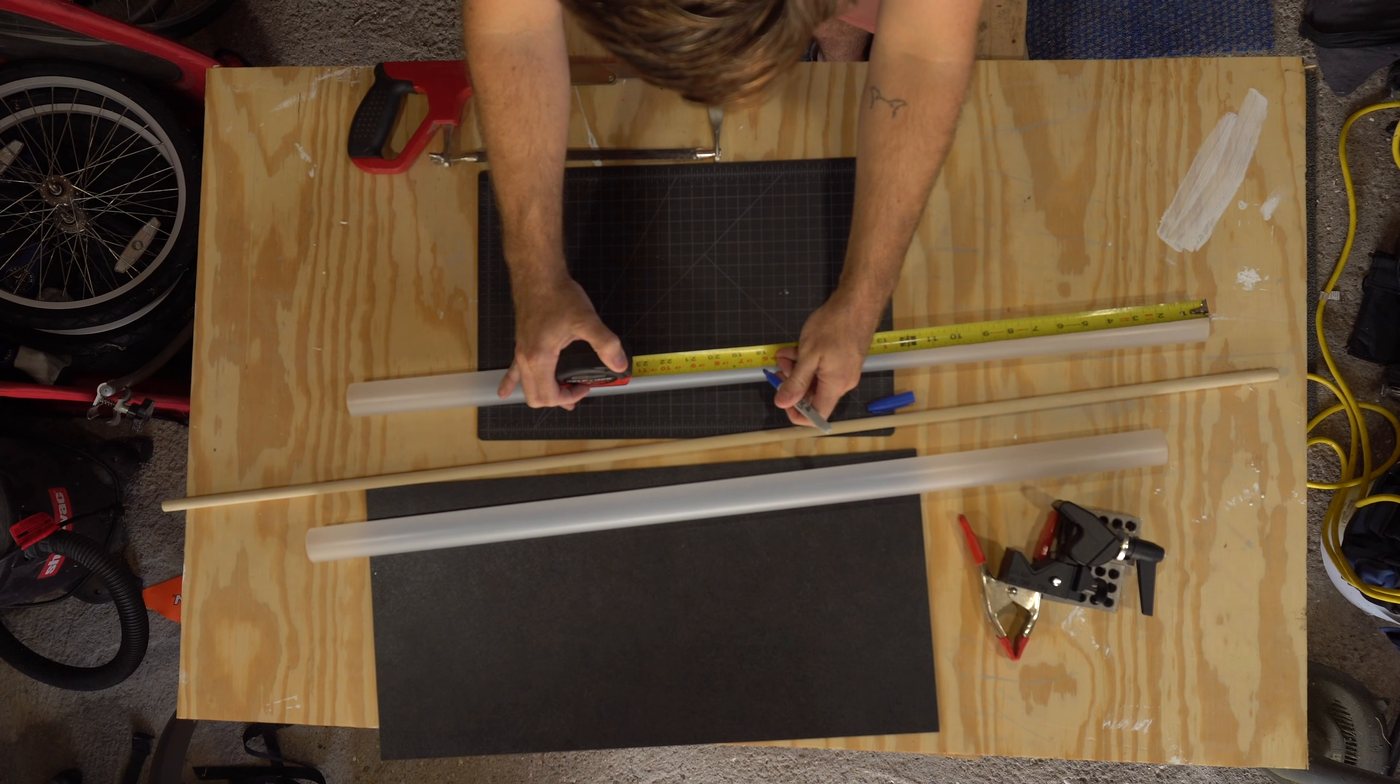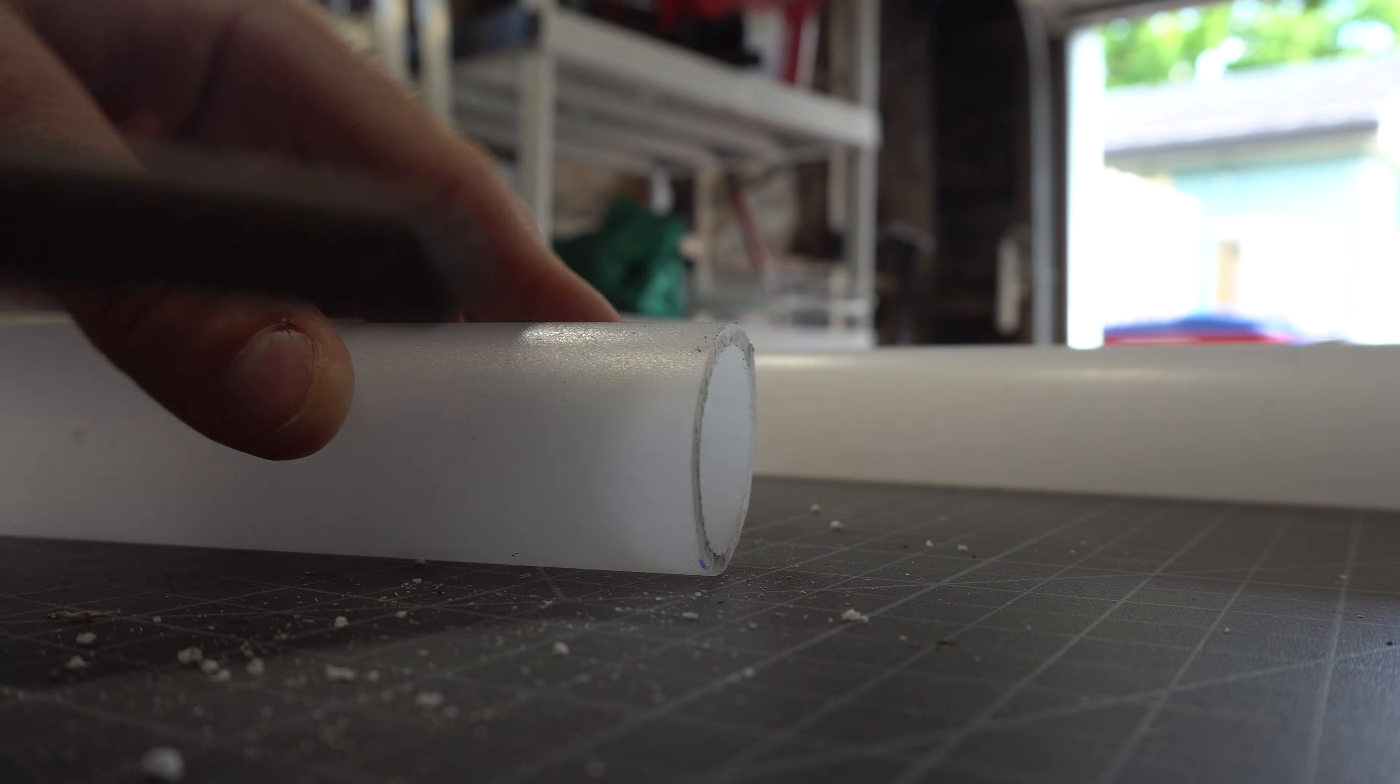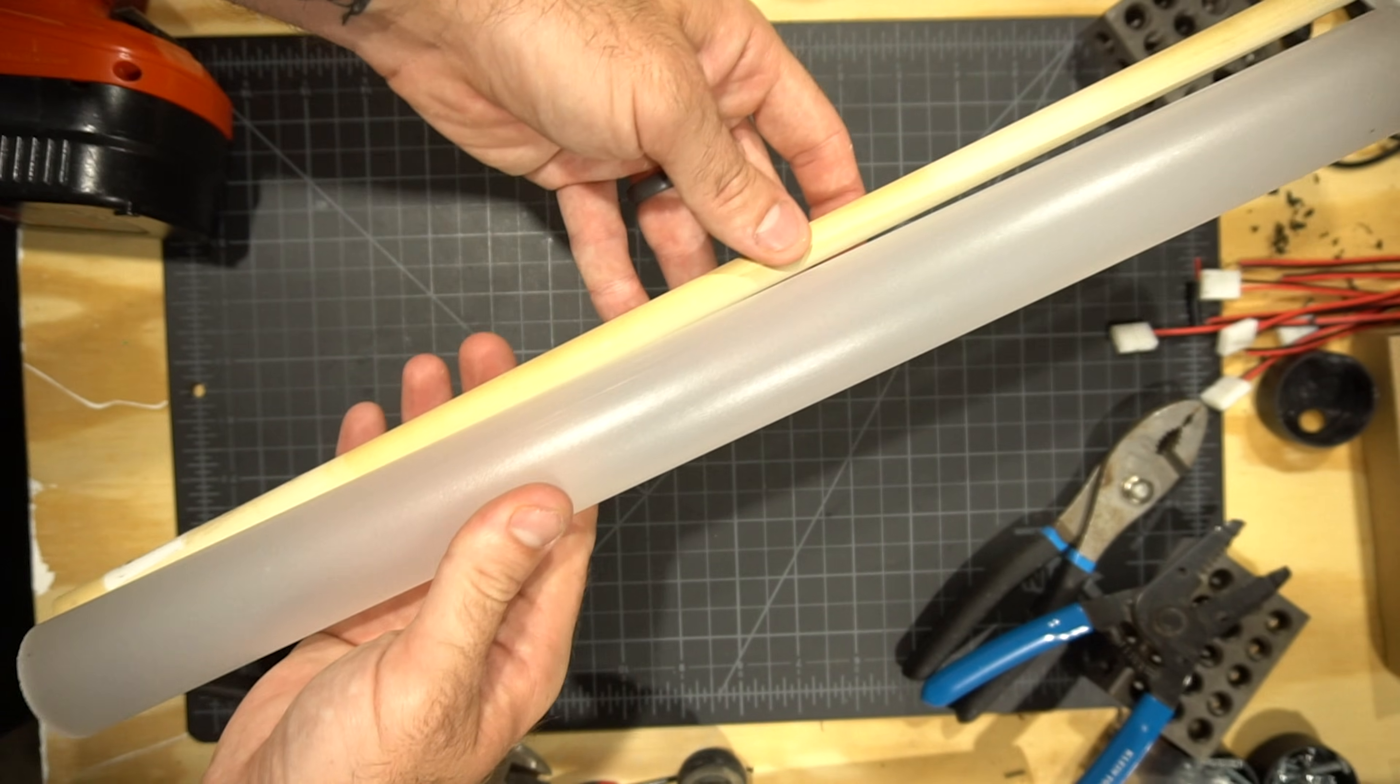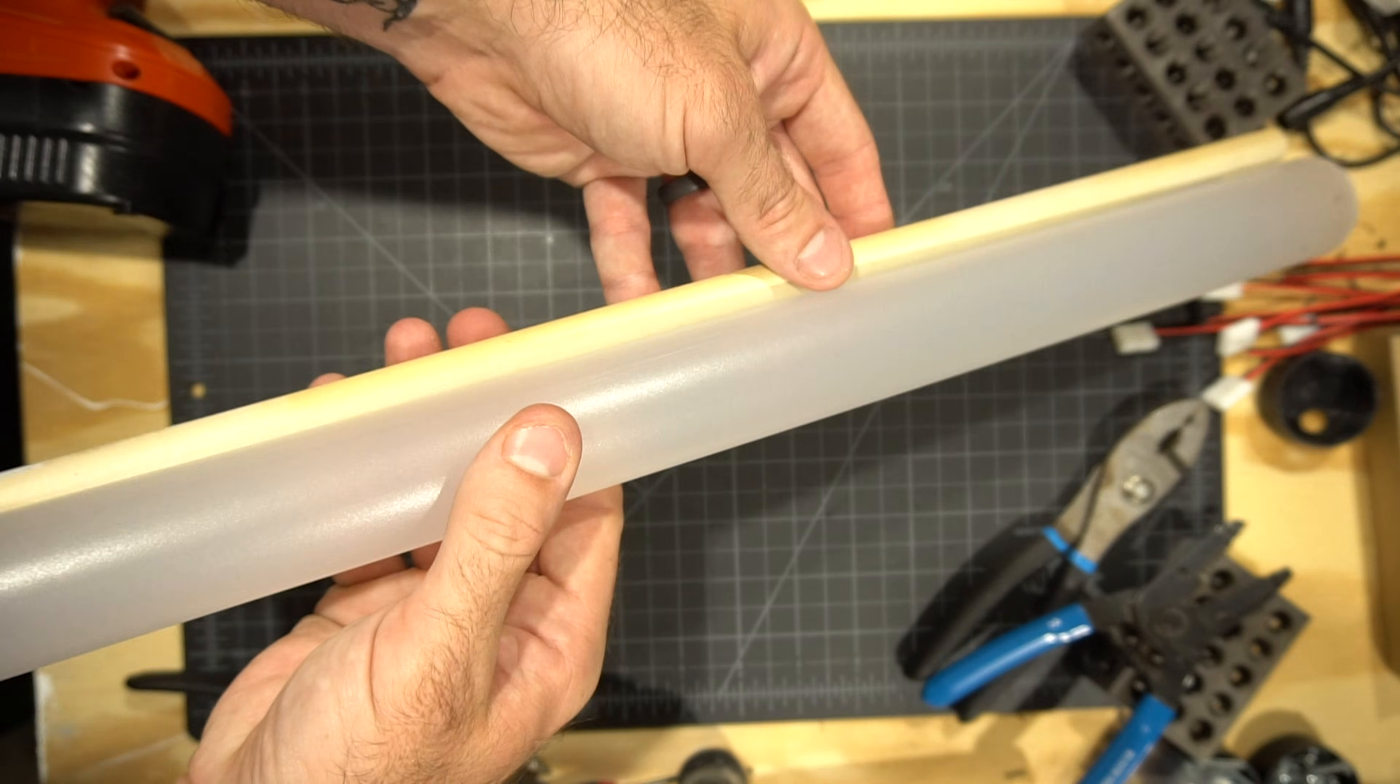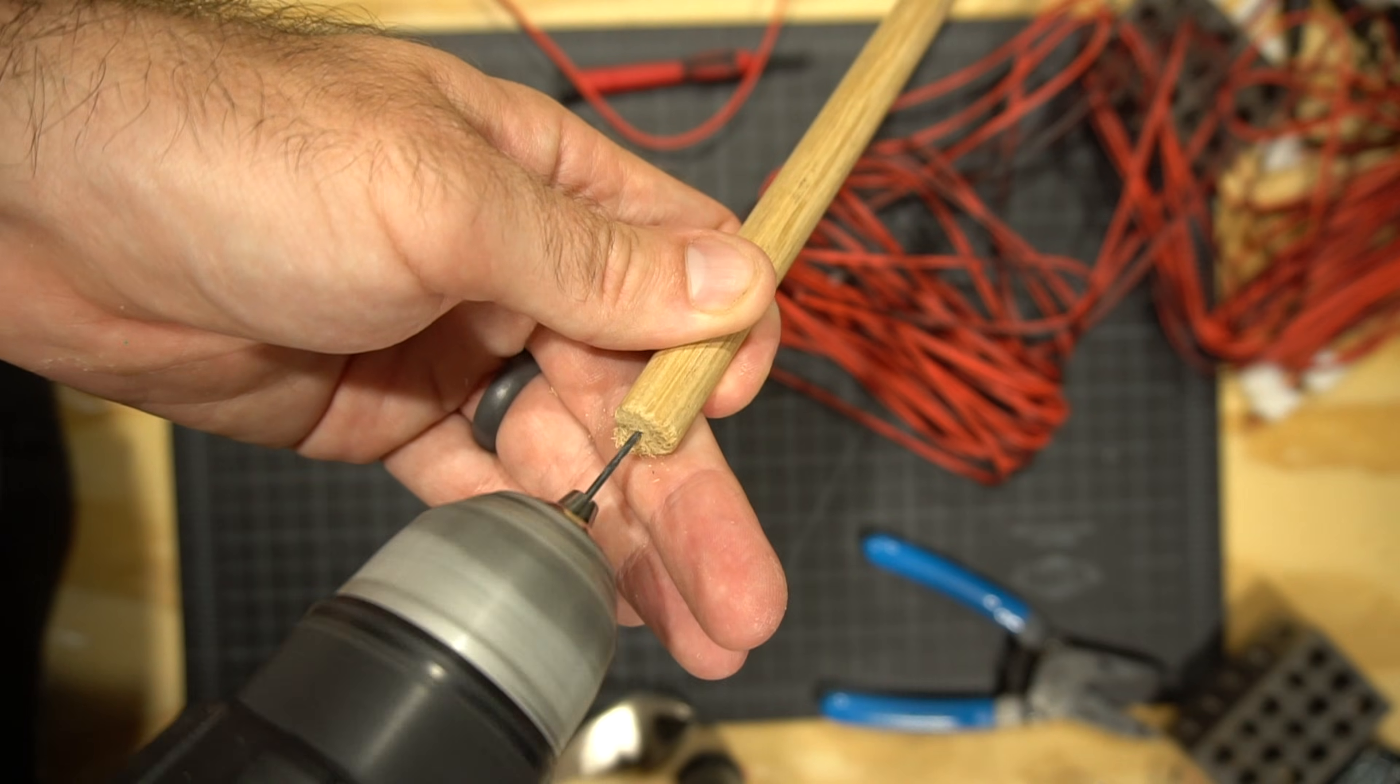I actually cut my tube down to make 18-inch lights so they would fit in my pelican cases, but you can literally make whatever length you'd like. If you decide to cut them, just use a hacksaw and then sand or file the ends down so they're nice and smooth. Cut down your dowel to the length of your tube, and then we want to drill two small pilot holes at both ends.